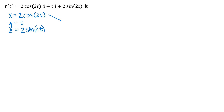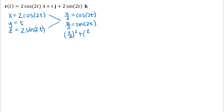I would notice there are trig functions, so I would choose to eliminate the parameter for my x and z equations. If I solve the x equation for cosine 2t, I get x over 2 equals cosine 2t, and then solve the z equation for sine 2t. Using the Pythagorean identity: (x/2)² + (z/2)² = 1. That circular cylinder is what the curve lies on. Also, y is an increasing function of t that increases at a constant rate — dy/dt is 1 — which tells us how the curve lies on the cylinder.